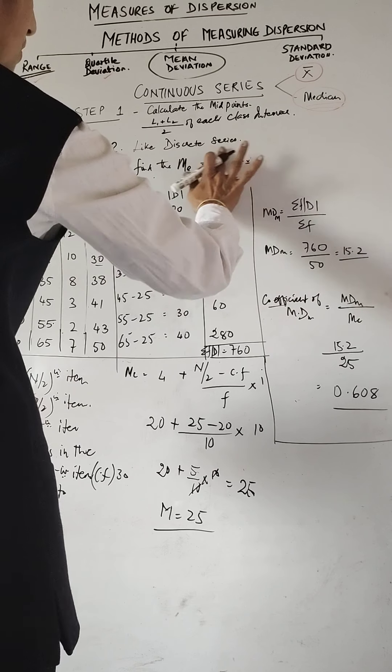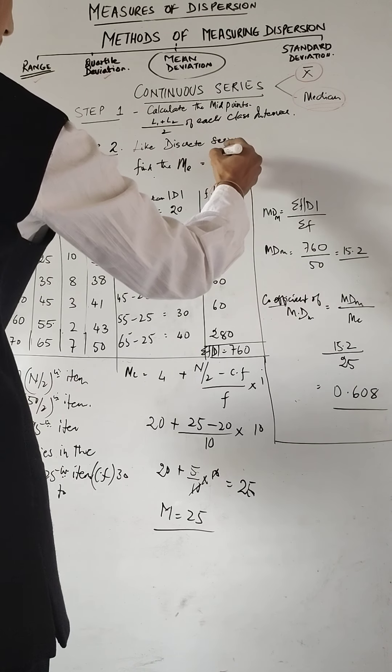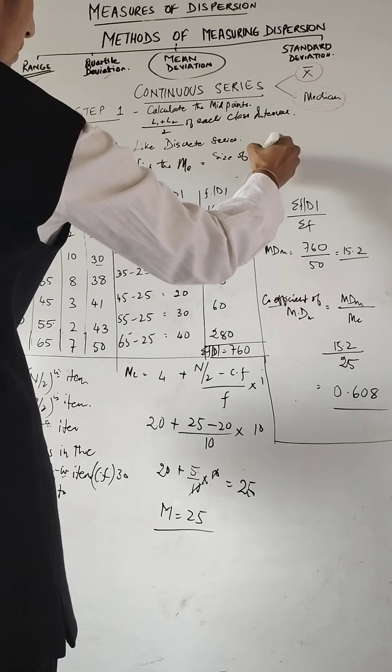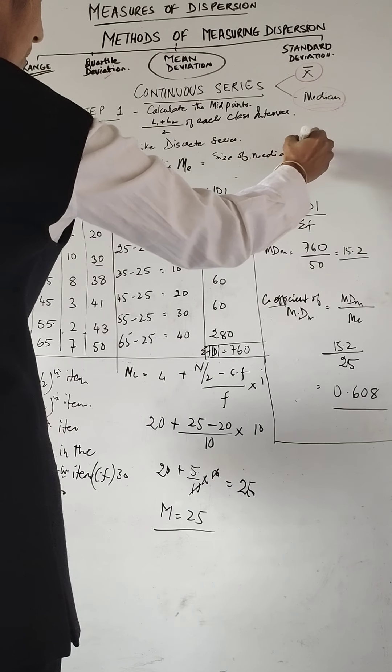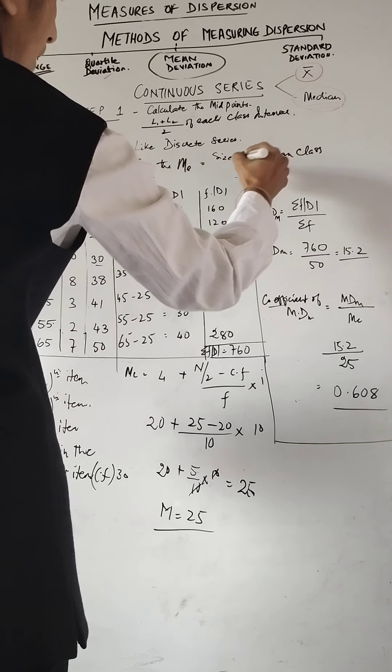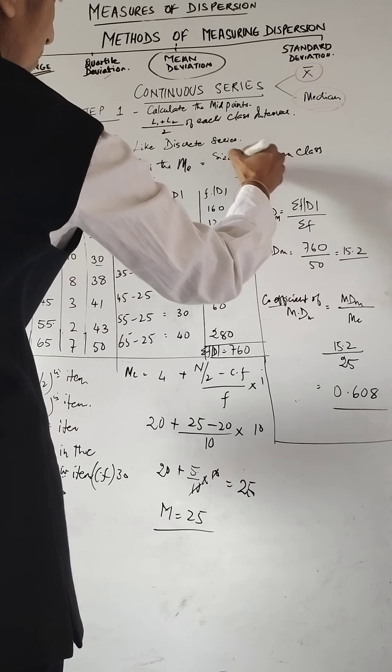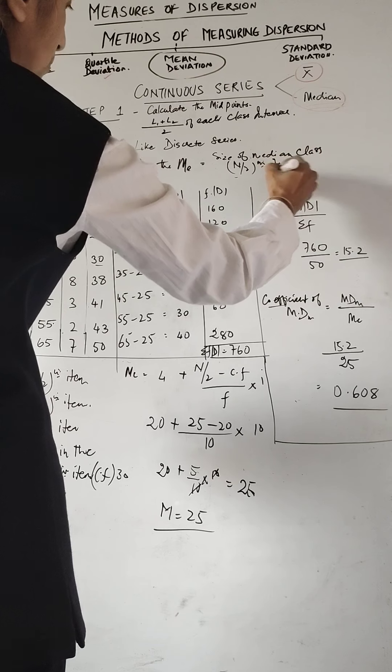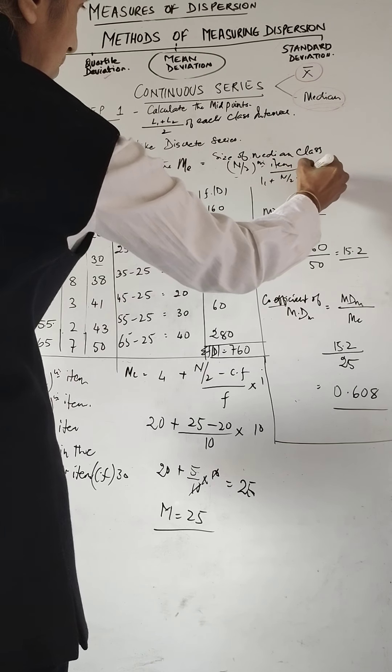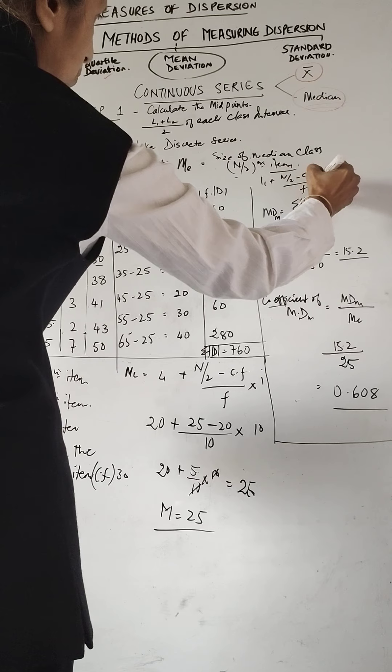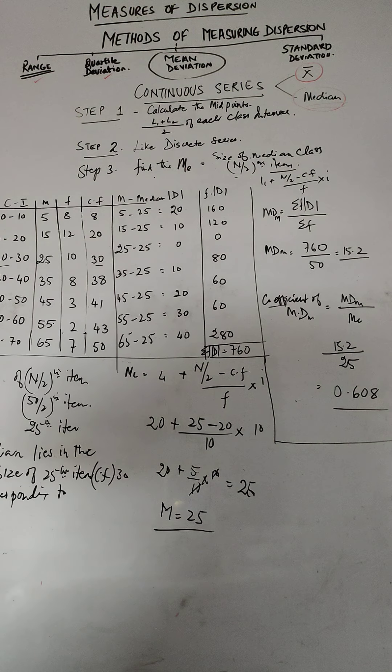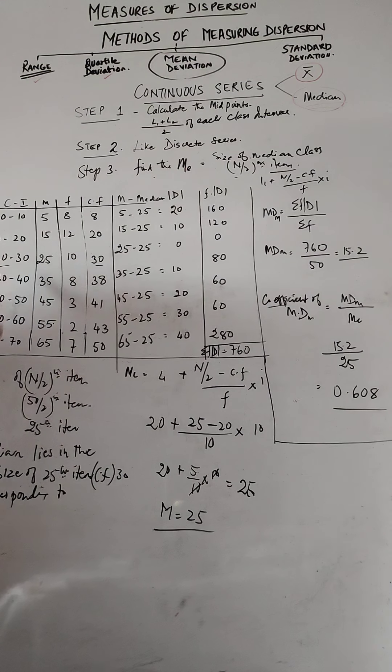In that what we'll do is first we'll find out in which median class it is. The size of the median class, how do we find out? So we find out as N by 2th item. Once you do that it will be L1 plus N by 2 minus CF upon F into I which we will do as we know how to work out the median.